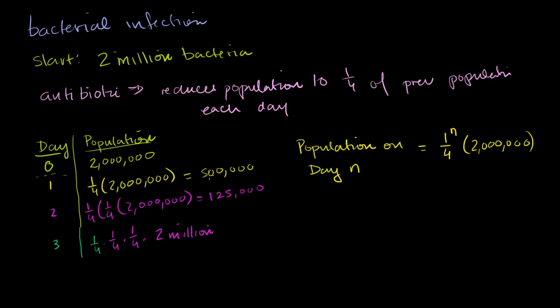And if we were to graph it, we're only going to be dealing with positive x's. So on day 0, we start at 2 million. Let's say this is 1 million. On day 1, we're at one-fourth of that, so that's 500,000. On day 2, we're one-fourth of this, so this is 250,000. That's 125,000. And then on day 3, we're one-fourth of that.